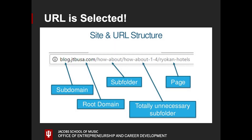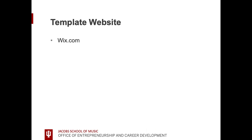Once you have your personal URL selected, you'll need to choose your hosting platform. If this is your first website, we recommend template websites available through companies like Wix.com, Weebly.com, or Squarespace.com, because they're easy to learn and use.